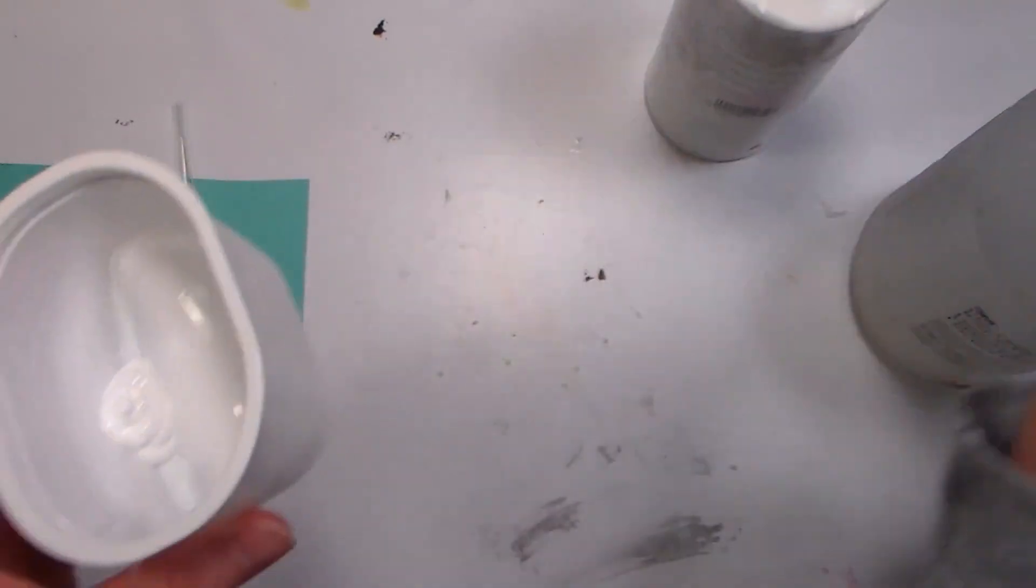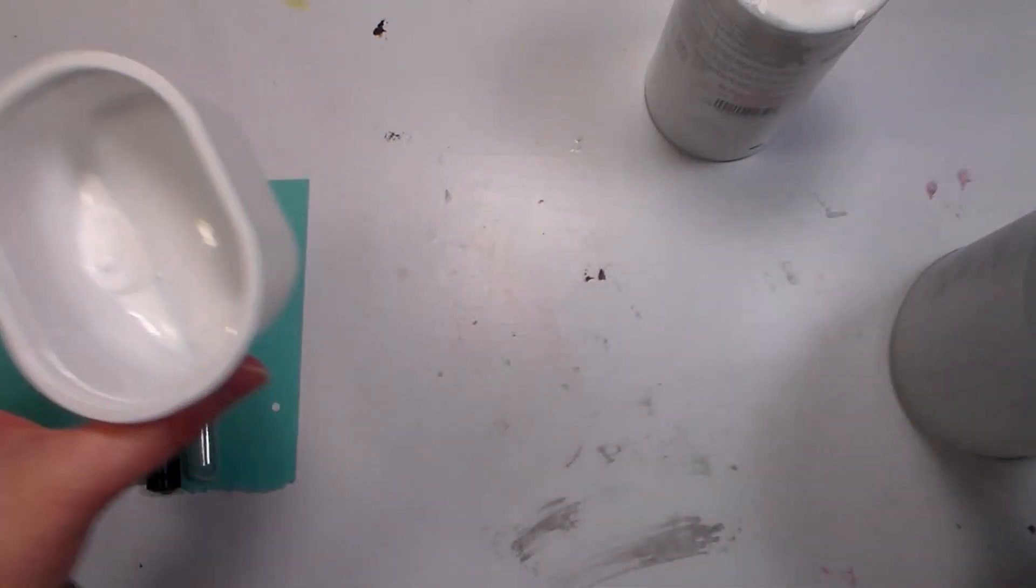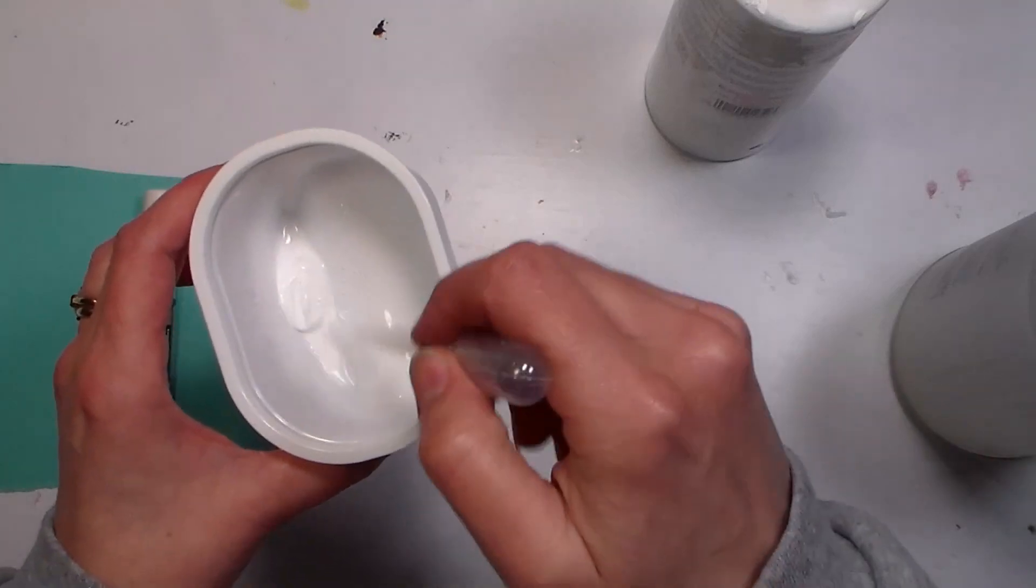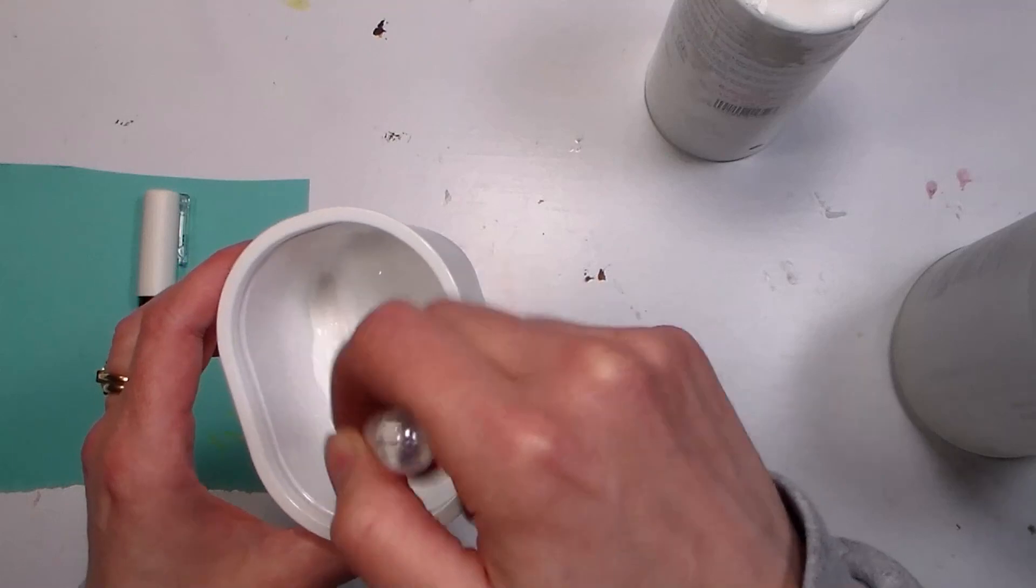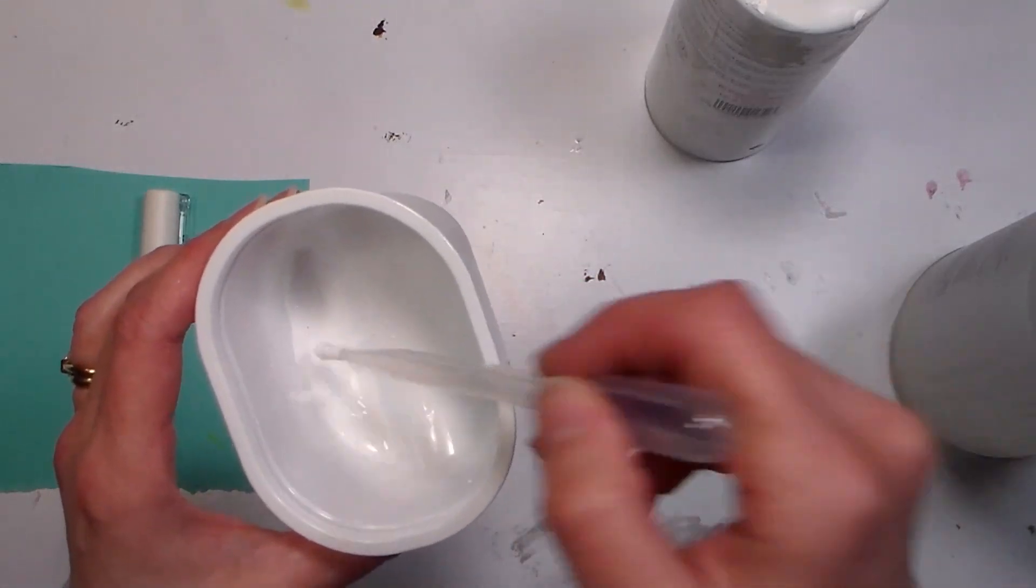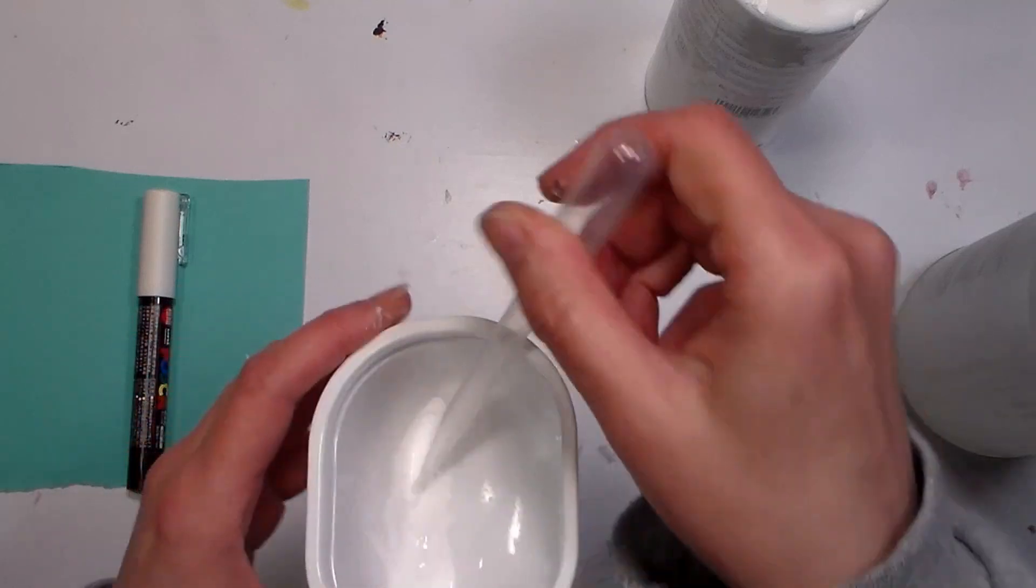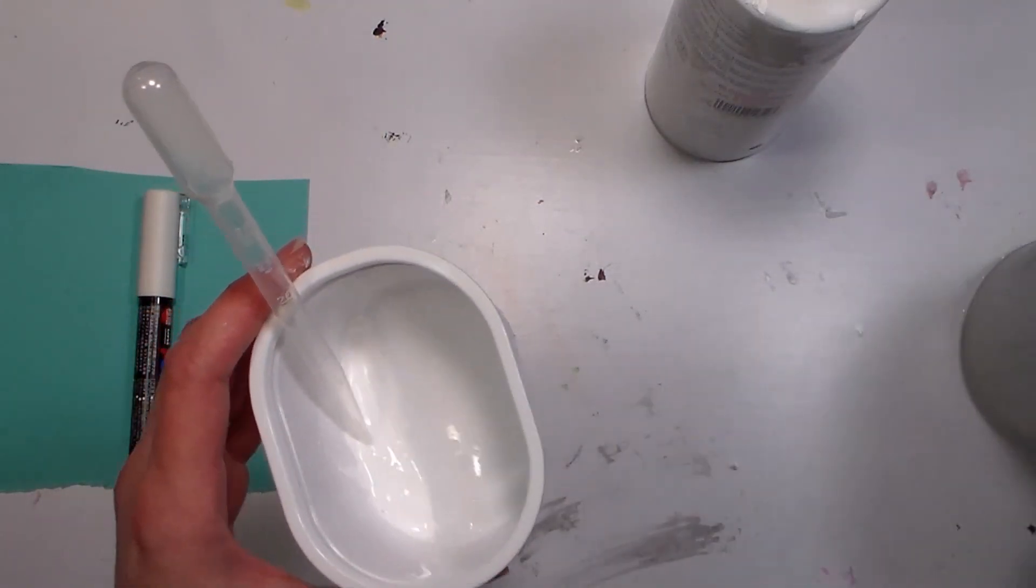And then I am going to use a spray bottle to add some water to it, because I just want to thin it down a little bit, but not too much, and I'm just going to stir it up with a pipette because I'm going to need something small that I can load up my pen with, and it needs to be the consistency of probably like a heavy cream that's still a little thick, because it's going to be able to come out of the pen.